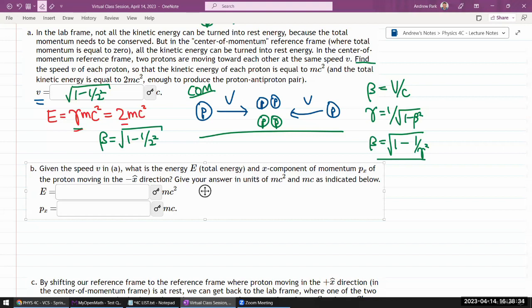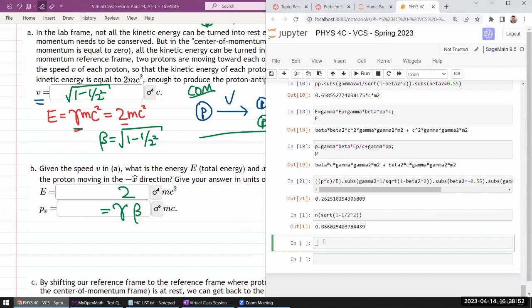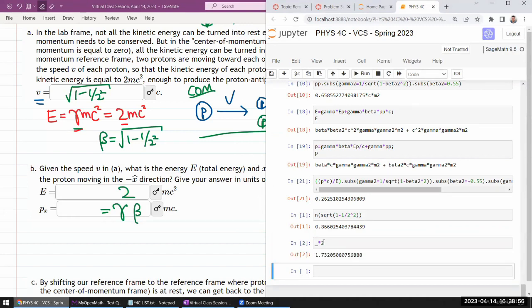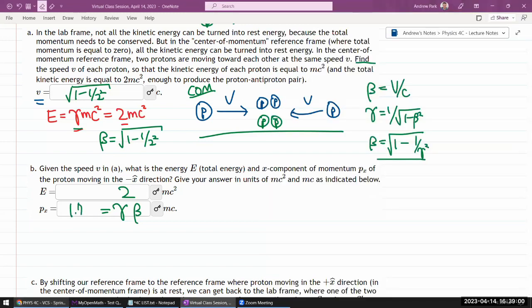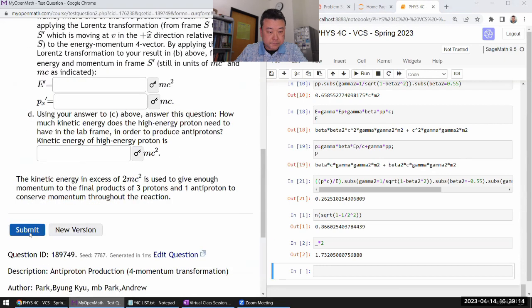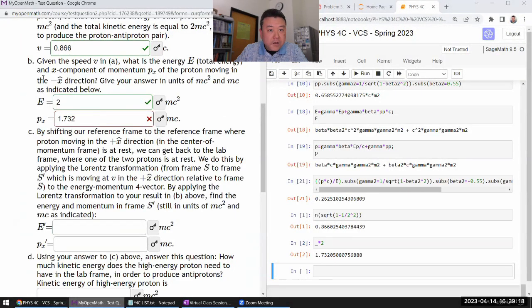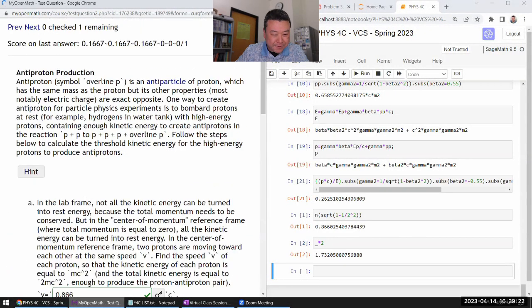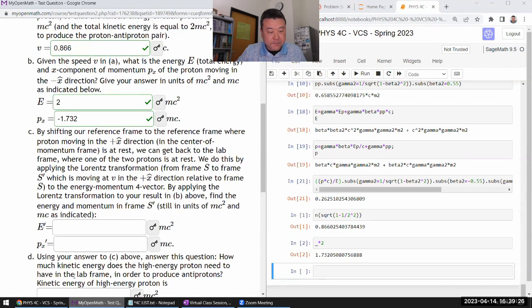Given this speed, what is the energy and x component of momentum? We already worked out that its energy should be 2mc² and its momentum should be gamma times beta c. So gamma times beta, let me do that calculation quickly. The previous output times gamma which is 2 gives 1.732, so in the negative x direction minus 1.732.